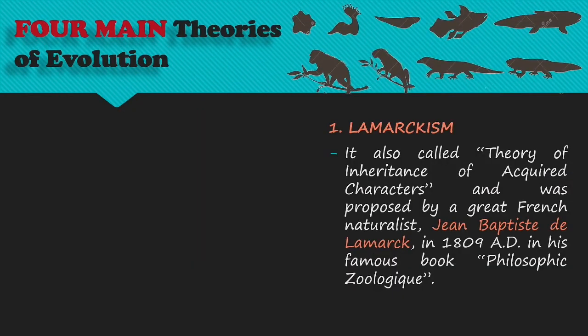In the late 18th century, naturalist Georges-Louis Buffon suggested that life on Earth was 75,000 years old and that man had descended from apes. Another early theory was proposed by Erasmus Darwin, Charles Darwin's grandfather, who said that the Earth was millions of years old and that species had changed, though he could not explain how.